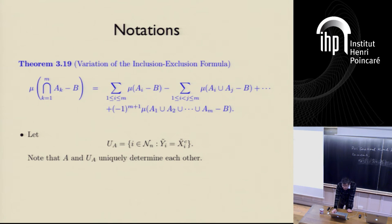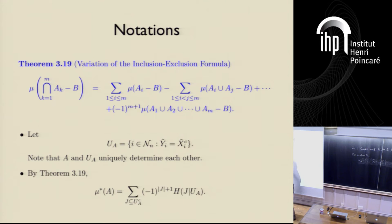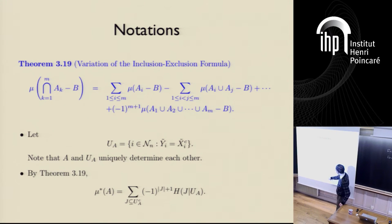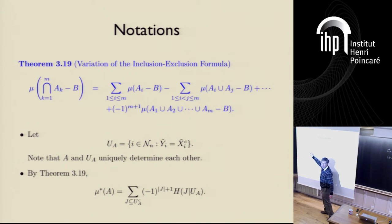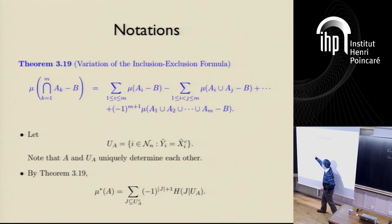We take a look at this variation of the inclusion-exclusion formula. The value of mu-star on an atom can be written as a linear combination of the conditional entropy of Xj, where j is in the complement of UA conditioning on UA. That is because in the formula, the b plays the role of UA — these are the complemented variables. And then these are just subsets of the rest. So this is actually another form of the variation of the inclusion-exclusion formula when applied to an atom.